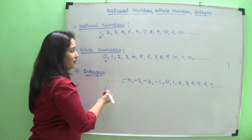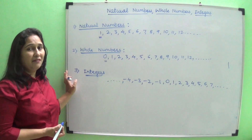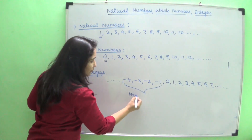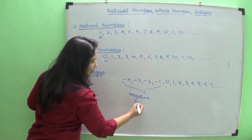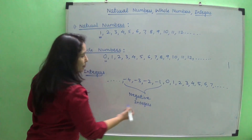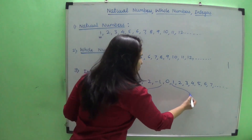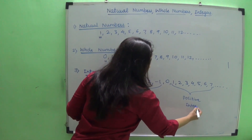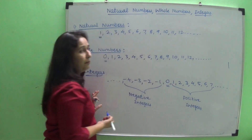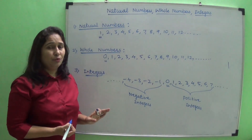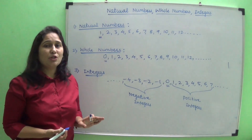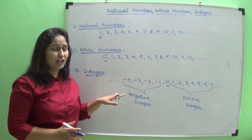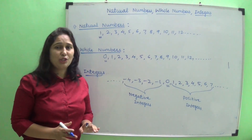The negative numbers on the left side of zero — all those numbers we call negative integers. The numbers on the right side of zero — all those we call positive integers. Zero is an integer but it is neither positive nor negative. There is no sign for zero, but all negative integers have a minus sign and all positive integers have a positive sign.